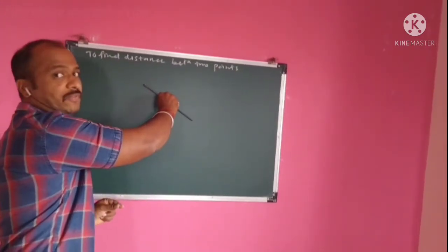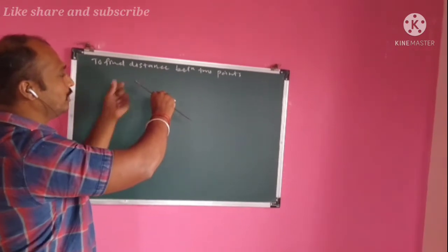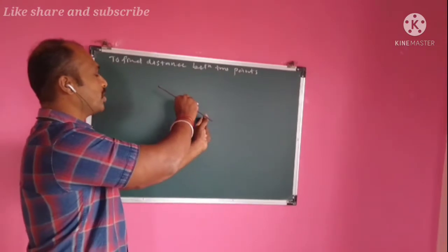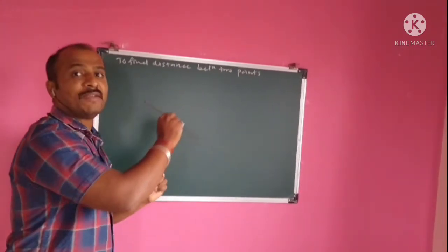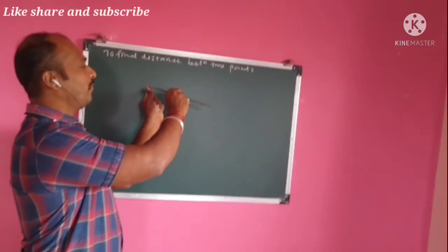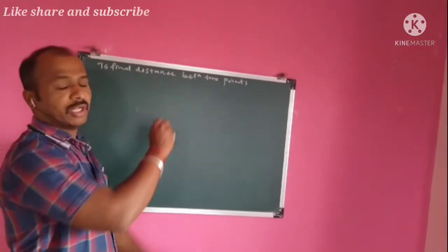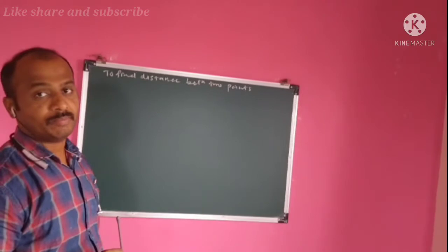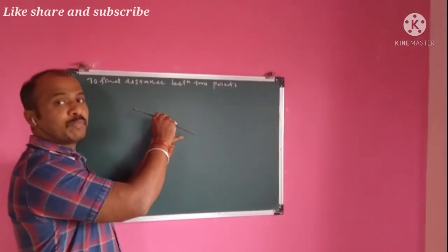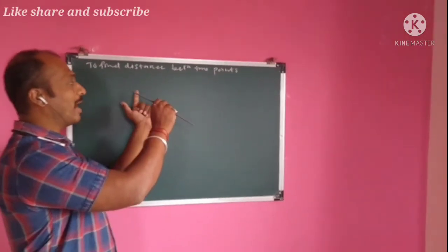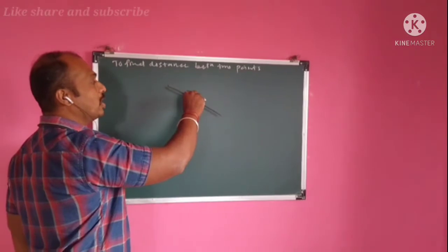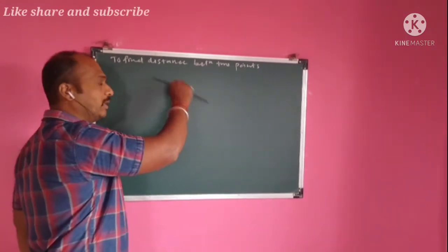If the line is parallel to the VP, then the true length will appear in the front view. For this to happen, both points must be at the same distance from the VP. If both points are, say, 50 mm in front of the VP, the line will be parallel to the VP and we get the true length in the front view.